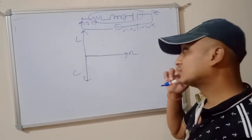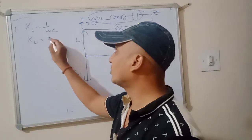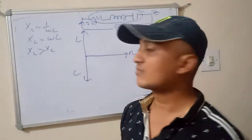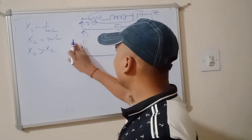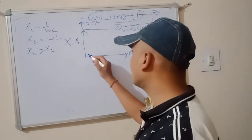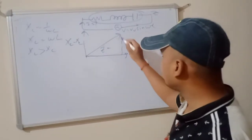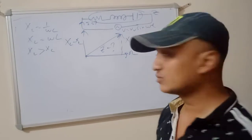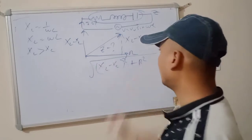First of all, let us assume that XC equals 1 upon omega-C and XL equals omega-L. Let us assume that XL is greater than XC. If XL is greater than XC, then the net reactance will be XL minus XC. The result is R and XL minus XC, so Z will be the hypotenuse. You can take this: Z equals the square root of (XL minus XC) squared plus R squared.